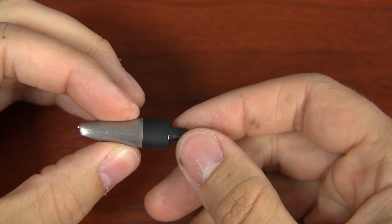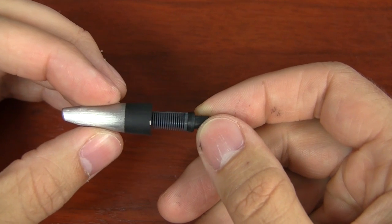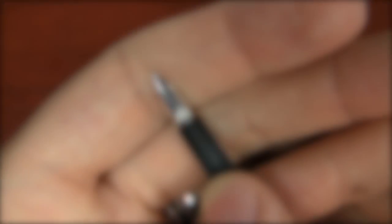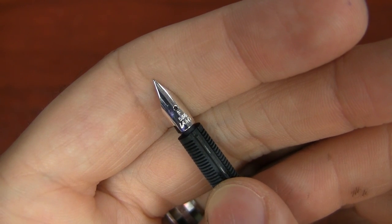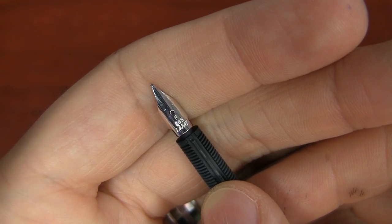And you see there is the nib and the feed unit that is right inside the middle there. And then if you look really close, you can see, aha, this is a fine. So I know that I have a fine nib, Lamy 2000.